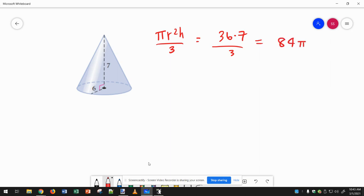84 pi is the exact value, but then rounded to, let's see, depending on where we need to round to. If we need nearest whole number is 264, one decimal place would be 263.9. Two decimal places would be 263.89, so depending on what we're asked for.